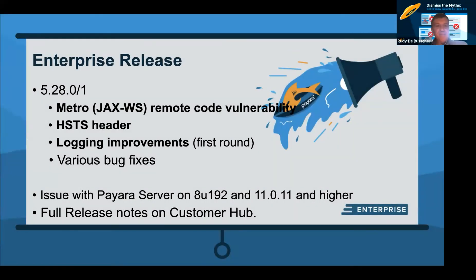For the enterprise release, we have mostly the same things: the remote code execution vulnerability fix, the HSTS header, logging improvements, various bug fixes, and by default the TLS issue on newer JDKs — but there is a patch available for enterprise users who want to run the latest Java versions.